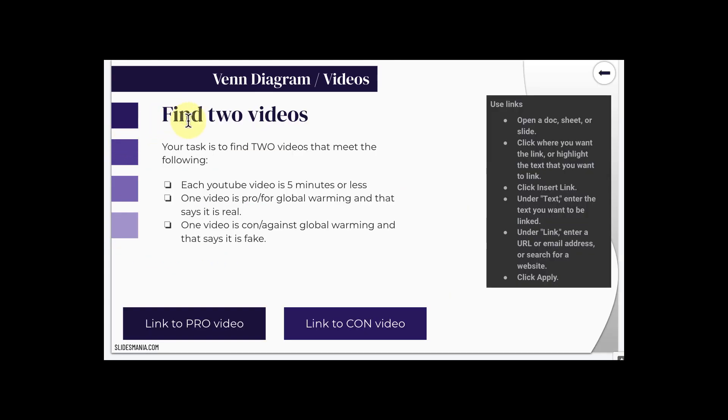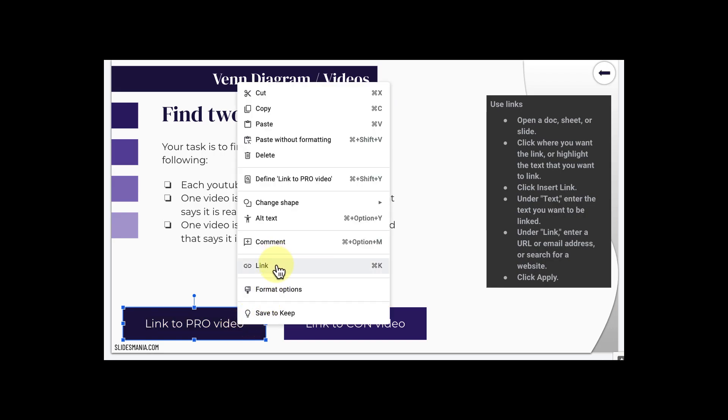So I wanted you to find two videos that would meet the following criteria. Each YouTube video is five minutes or less. One video is for global warming or pro global warming, and that says that global warming is real. And then another video that is con or against global warming, I'm just going to say it's fake. You're going to find that video and hyperlink it. Here's the directions to hyperlink. You can use right click and then press link.